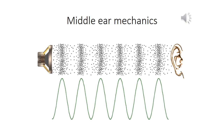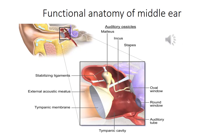Middle Ear Mechanics. The mechanism by which sound energy transfers from the atmosphere to the tympanic membrane, and through the middle ear, how it reaches the oval window. This is a diagram of the middle ear.